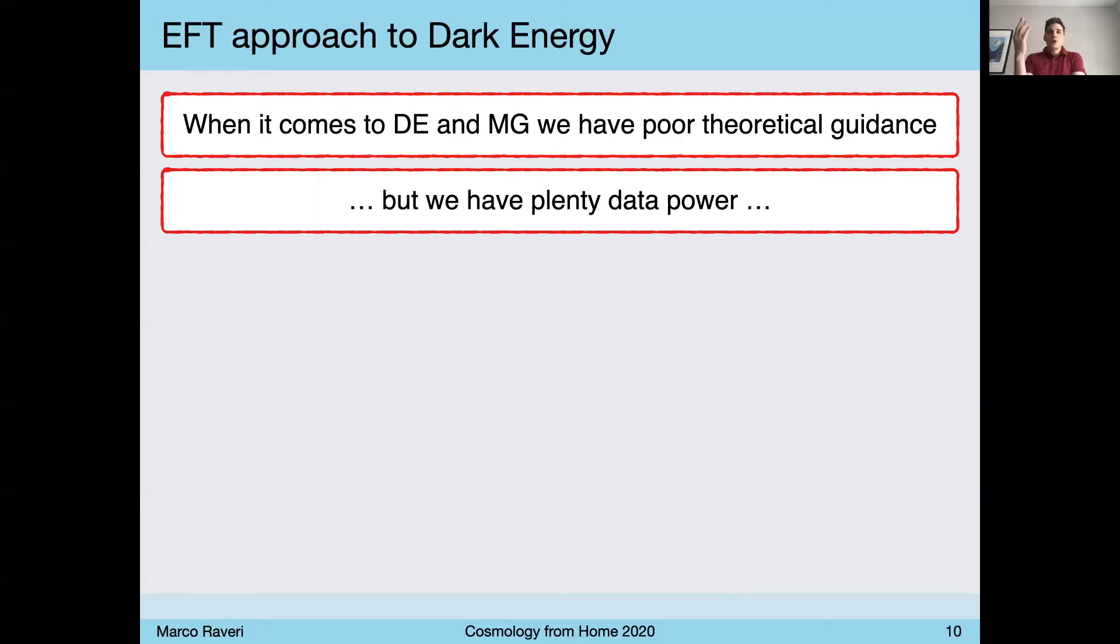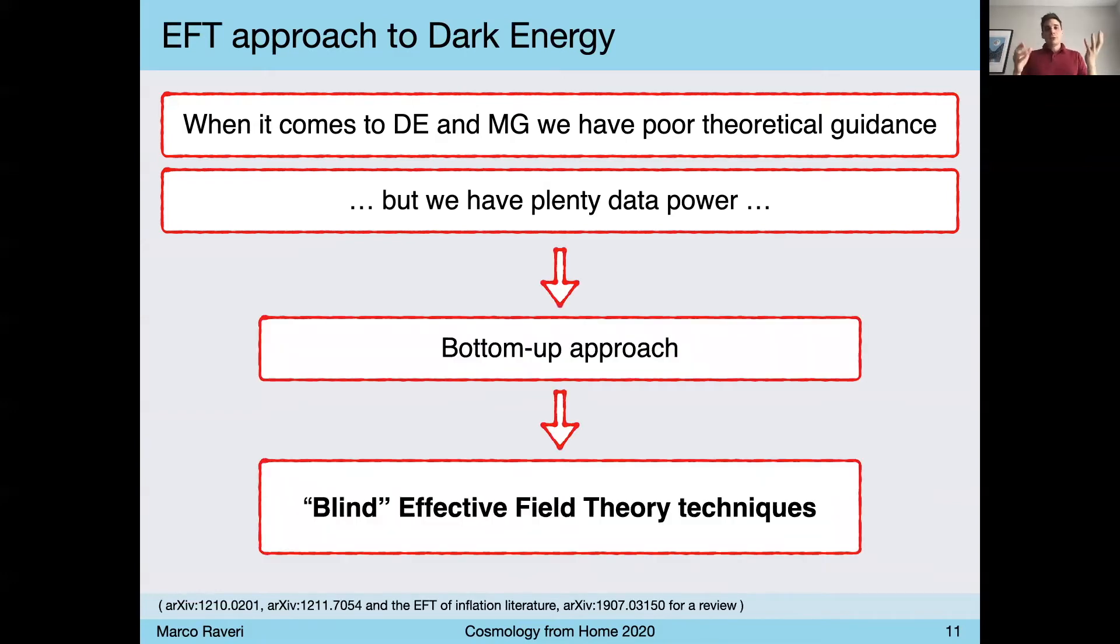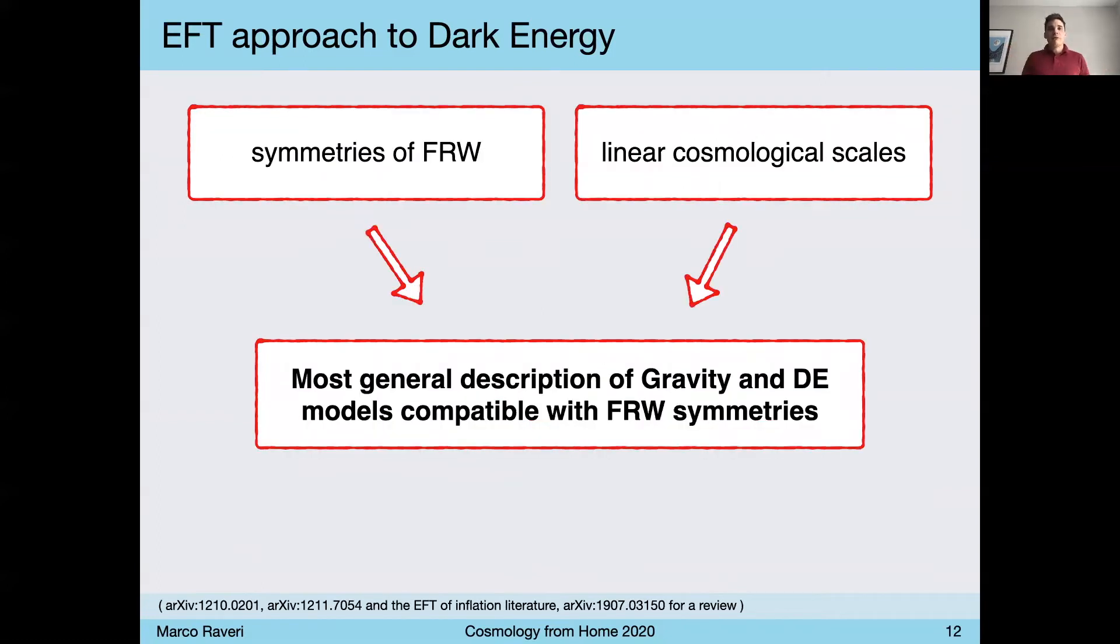So we want to still make progress, even if we don't really have guidance in doing so. People have figured out how to overcome this situation and still make progress. And this entails using bottom-up approaches that borrow ideas from effective field theory techniques that are blind in the sense that they don't really need much theoretical guidance. The only ingredients that we know are the symmetries of the physical system that we consider. So the symmetries of FRW, which is spatial homogeneity and isotropy, and broken time diffeomorphisms because we have time evolution.